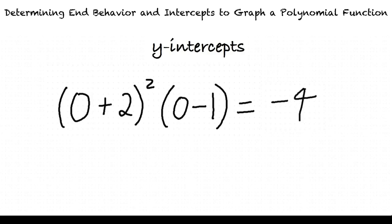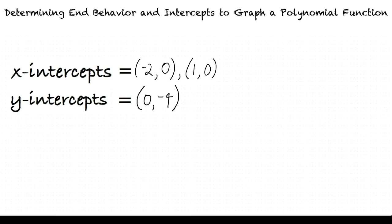Now, do we have all the necessary pieces of information to graph this function? Yes, we do! Let's begin by plotting the intercepts (-2,0), (1,0), and (0,-4), keeping in mind the aforementioned general form of the function, falling to the left and rising to the right.